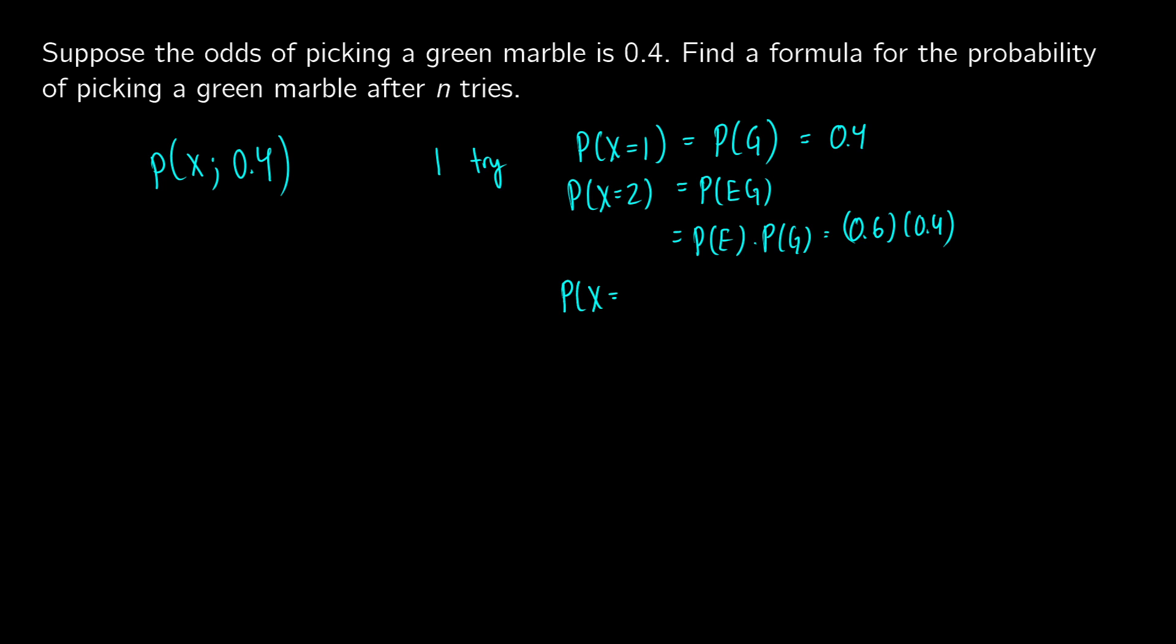What if we have p of x equal to 3? Well, this is the probability of two things that are not green, followed by the probability of getting something green. We're doing the probability of something else times the probability of something else times the probability of getting something green. What does this come out to? 0.6 times 0.6 gives us 0.6 squared times 0.4.